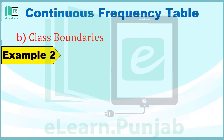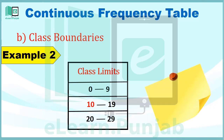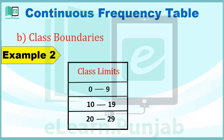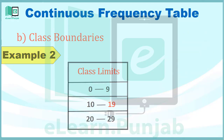मिसाल के तौर पर Example 2 को ही Refer करते हैं। अगर मैं कहूं कि इसमें Real Lower Class Limit 10 की 9.5 है, और इसी तरह 9.5 और 10.49 के दरमयान की تمام Values को 10 ही Record किया جاएगا۔ اسی طرح سے 19 کی Upper Class Limit 19.5 ہے، اور 18.5 اور 19.5 کے درمیان کی تمام Values کو 19 ہی میں Record کیا جاएगا۔ ایک Class کی Real Class Limits کو Class Boundaries کہتے ہیں۔